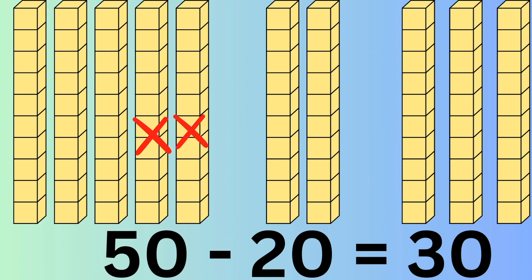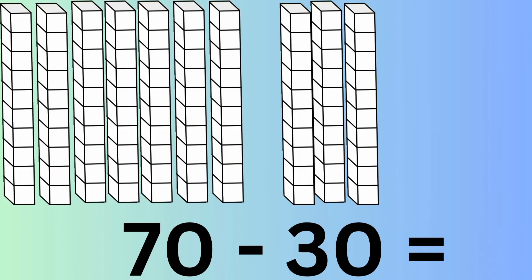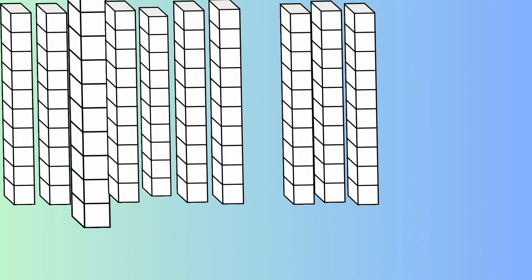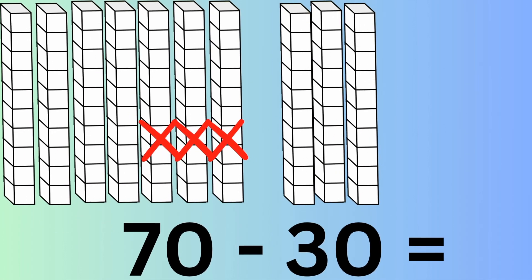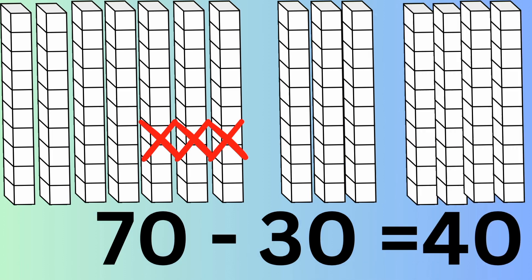Next up, seventy minus thirty. If you count the blocks of ten, there's seven of them. And then there's three on the right. This is seventy minus thirty. We marked off three for you. How many does that leave? There's four left. So it's forty.